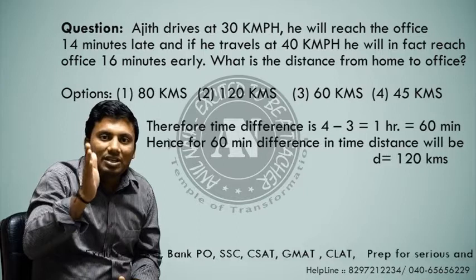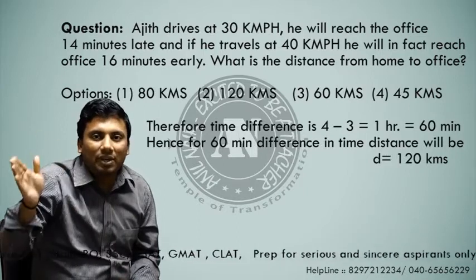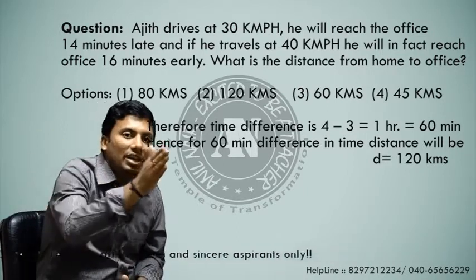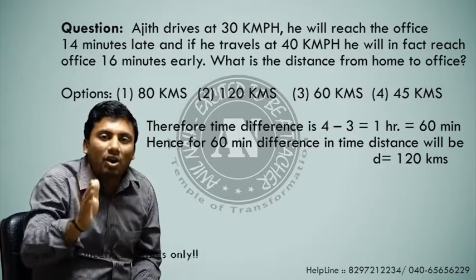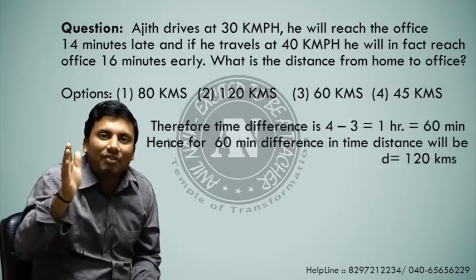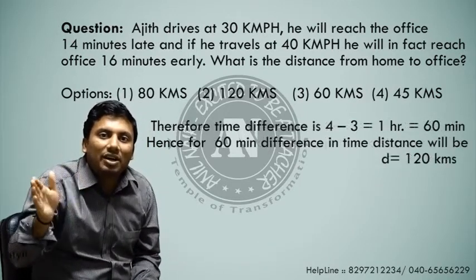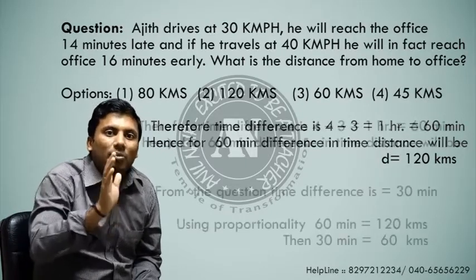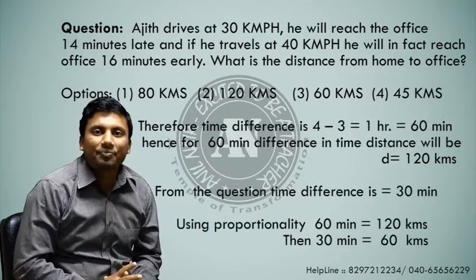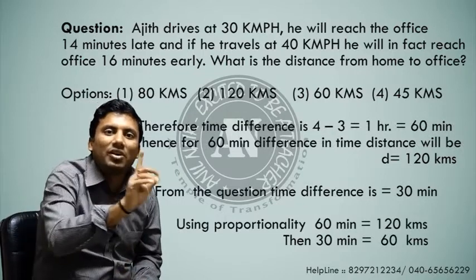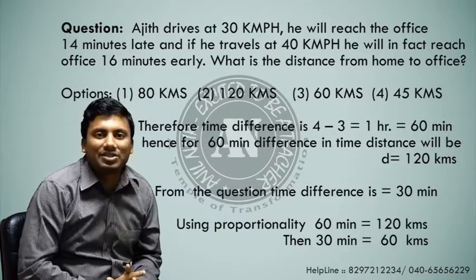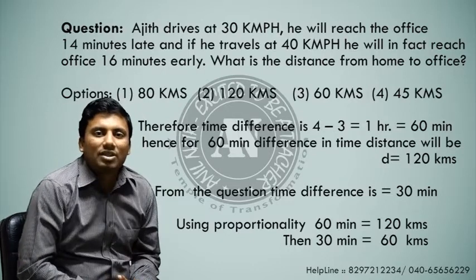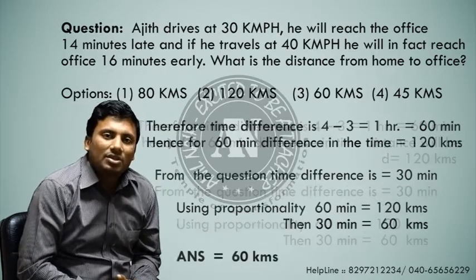That means a 60-minute difference in time corresponds to a distance of 120 kilometers. But according to the question, the difference in time is not 60 minutes but 30 minutes. By proportionality: 60 minutes → 120 kilometers, so 30 minutes → 60 kilometers. Therefore, the answer is 60 kilometers.